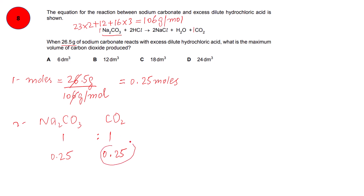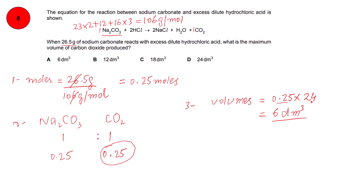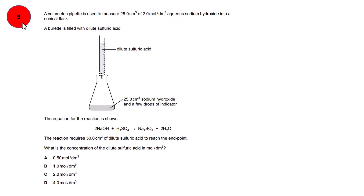The last step is to convert moles to volume. Volume of gas at room temperature and pressure = moles × 24 dm³. So 0.25 × 24 = 6 dm³. Remember this formula — to convert moles of a gas to volume, multiply by 24 dm³. If the answer is needed in cm³, multiply additionally by 1000. The right answer is option A: 6 dm³.